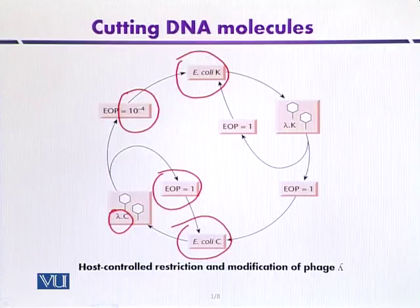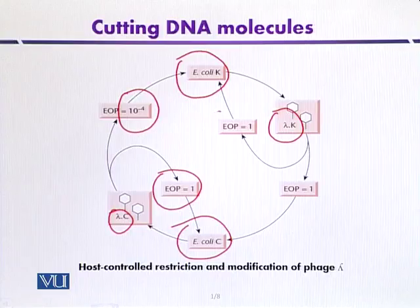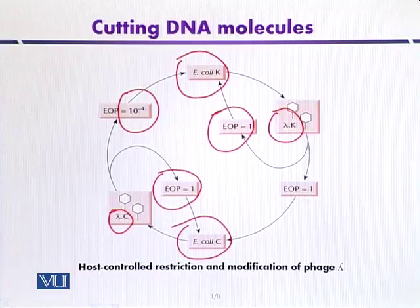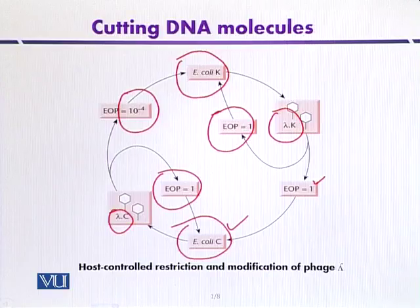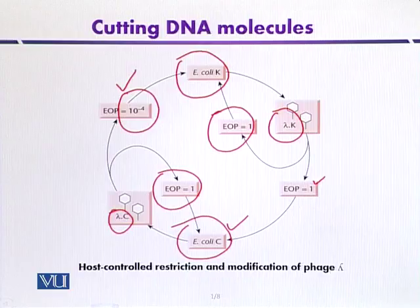Once phage strains grown on E. coli K are used to re-infect E. coli K, the plating efficiency is high — due to modification, because the DNA has been modified after replicating one cycle. However, once recycled through E. coli C, plating efficiency is again high on E. coli C, but if then used to infect E. coli K after recycling through E. coli C, the plating efficiency again becomes very low. This confirms that the restriction and modification mechanism is operating within the host organism.